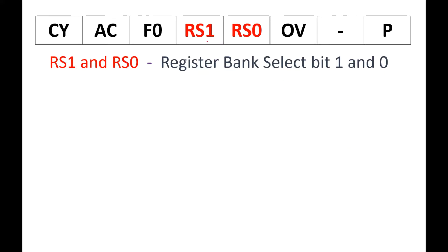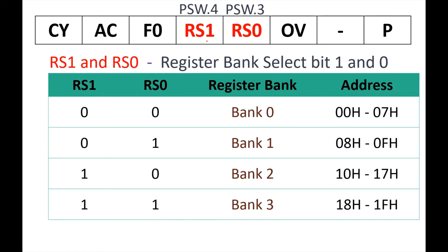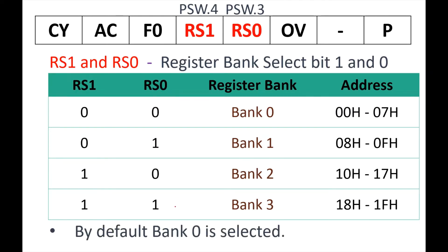RS1 and RS0 are PSW.4 and PSW.3 respectively. If RS1=0 and RS0=0, bank 0 is selected (address range 00 to 07). If RS1=0 and RS0=1, bank 1 is selected. If RS1=1 and RS0=0, bank 2 is selected. If both RS1=1 and RS0=1, bank 3 is selected. If you don't select a bank using RS1 and RS0, bank 0 is selected by default.